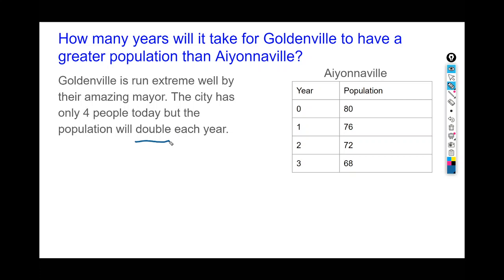It says how many years will it take for Goldenville to have a greater population than Aiyonnaville? Well, one way we could do this is we could just expand out each of these tables to see when does Goldenville overtake Aiyonnaville. So that's one way to do it. Sometimes that won't work—you'll be drawing on a table forever and it will just be too tedious. But sometimes it is a quick solution, so let's try that first.